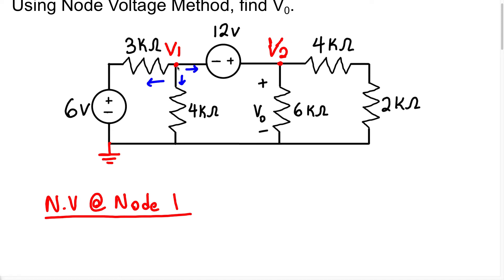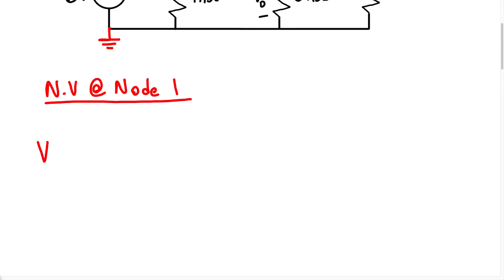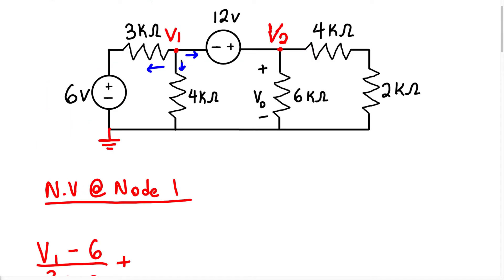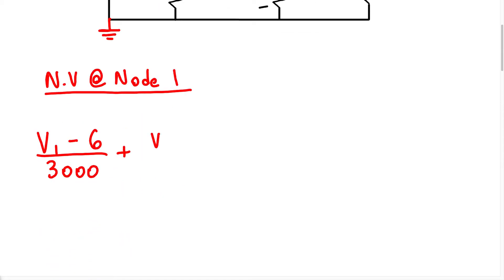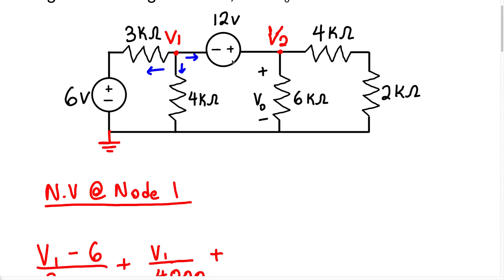So we're going to have the voltage V1, which is the voltage at node 1, minus 6 divided by 3000. We have V1 minus 6 divided by 3000, plus we're going to assume the current is going to flow through the 4k resistor, so we have V1 over 4000.